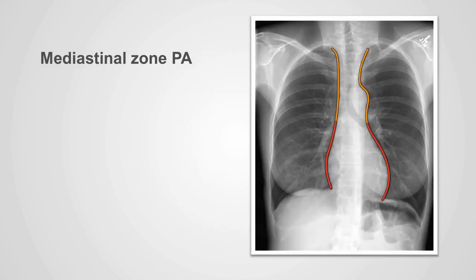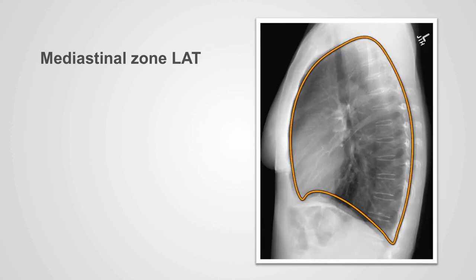The mediastinal zone on the PA x-ray is the wider area between the medial aspects of both lungs. The margins of this zone are clearly seen on the PA x-ray because a significant part of the mediastinum abuts the adjacent lungs and forms interfaces. On the lateral x-ray, the mediastinal zone covers the same area as the pleural and lung zones, from the front of the thorax to the back and from the top to the bottom.